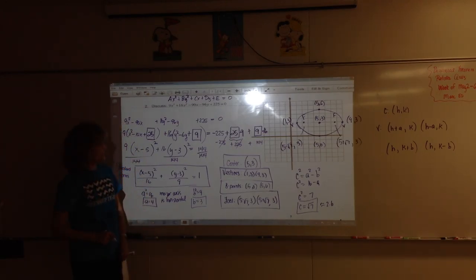In your discussion you should have center in a box, vertices in a box, B-points in a box, foci in a box. The foci labeled under draft and in a box. So 5 minus the square root of 7, 3, and 5 plus the square root of 7, 3. And there you have it. We discuss the conic. Questions? Kristen, will you stop that? Thank you, dear.